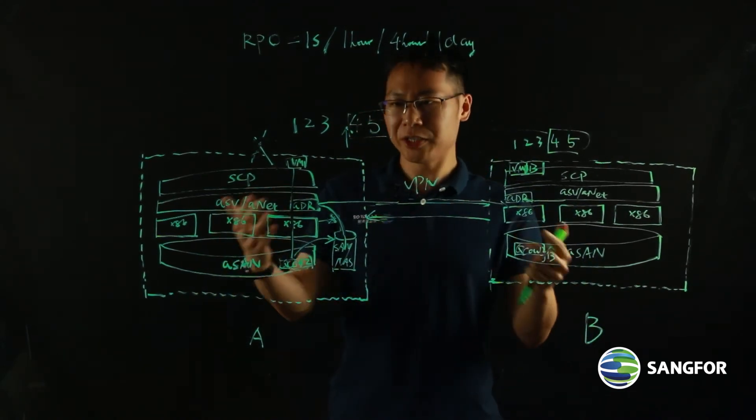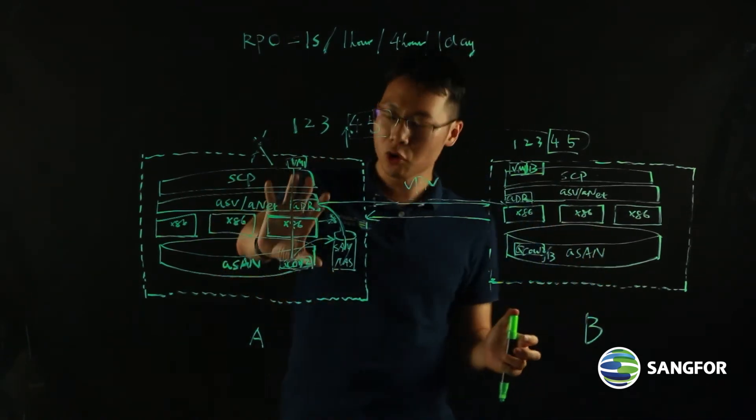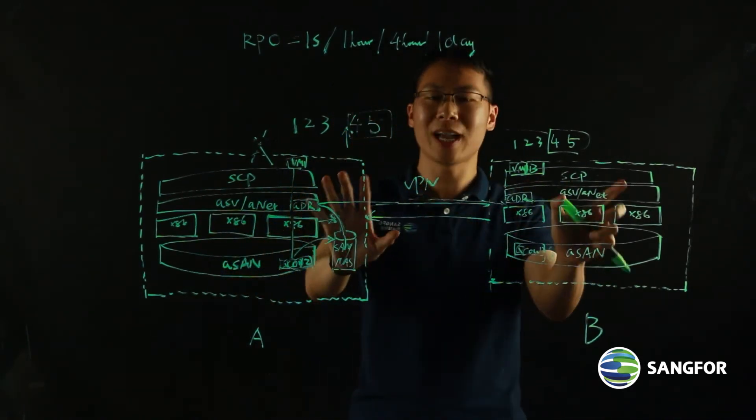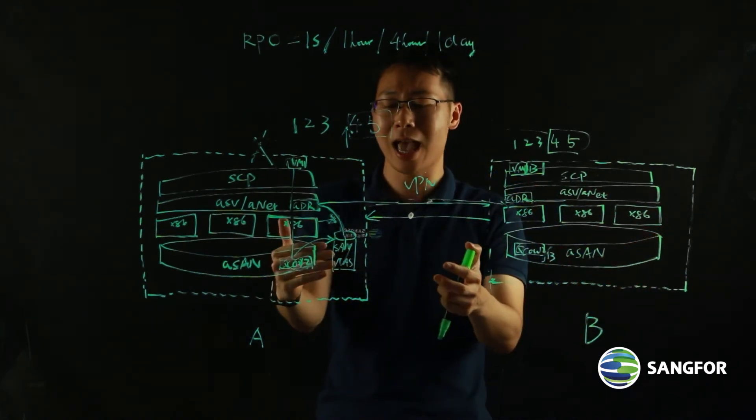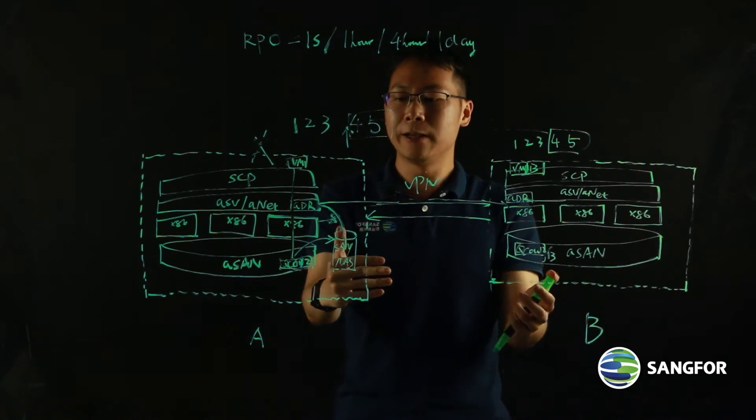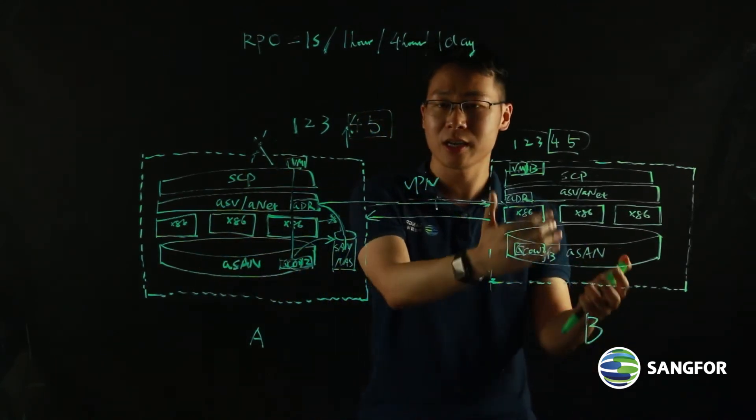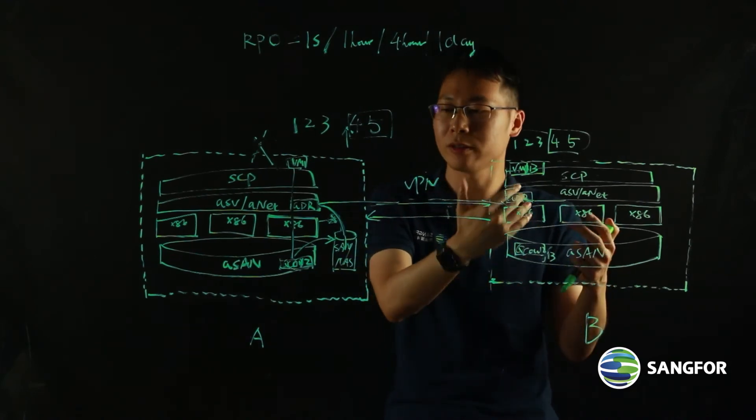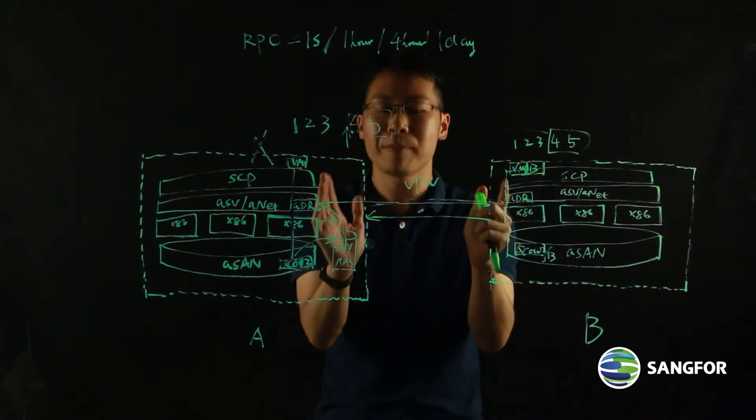So as you can see, the disaster recovery solution on HCI is a local backup plus remote replication disaster recovery solution. We call it active standby. Site A serves as a primary site, site B serves as a secondary site for disaster recovery purpose. And to control the bandwidth here, the ADR has a lot of features and functionalities to help you control the data transfer between the two sites.